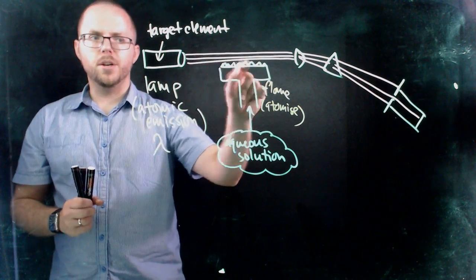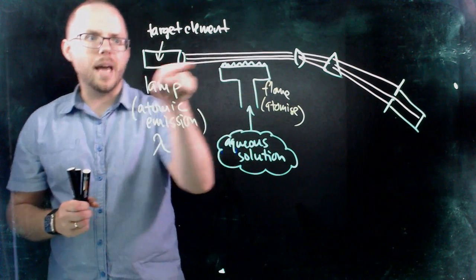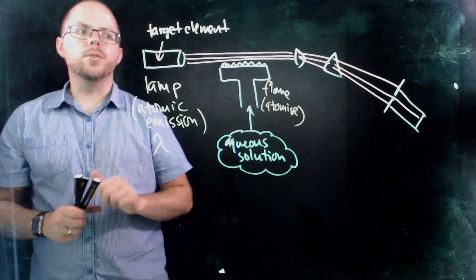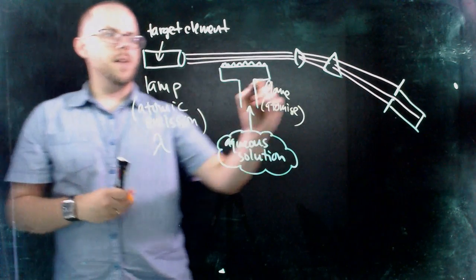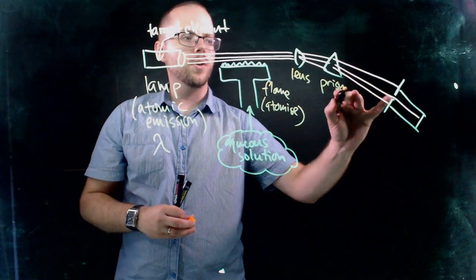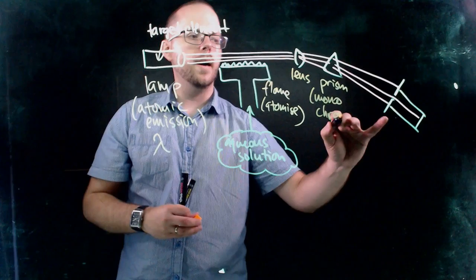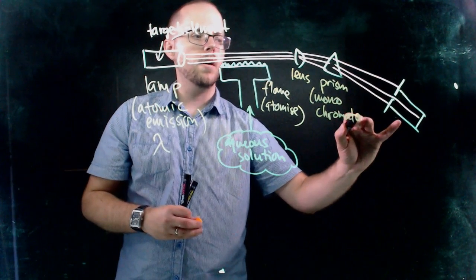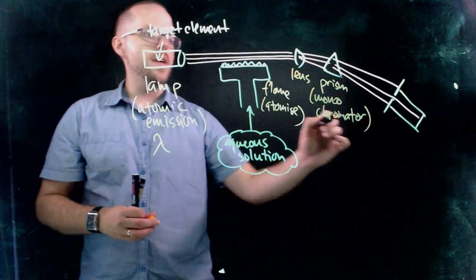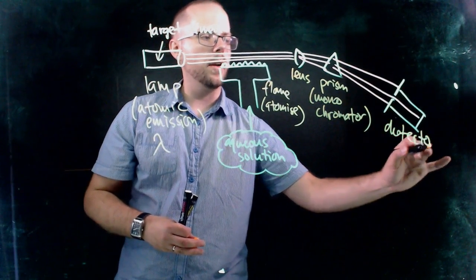In my diagram you can see the flame's kind of a bit underneath, but the idea is that where that sample is being atomized, those wavelengths are traveling right through it. What we have over here is we've got a lens, we've got a prism, which is also called a monochromator, one color, monochroma, a monochromator, and then we've got a detector.